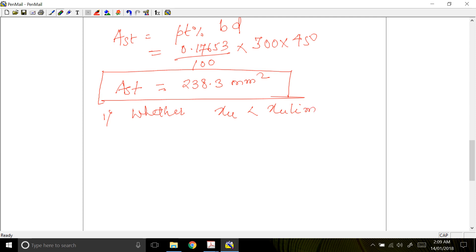XU limiting is equal to 0.46D. This 0.46 is because we have F500 grade steel. This formula you will get in page number 70 of IS 456:2000. So XU limiting is equal to 0.46 into 450 mm, which is equal to 207 mm.